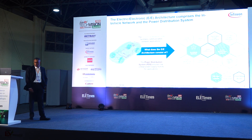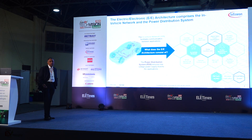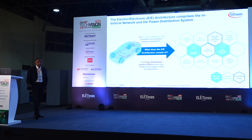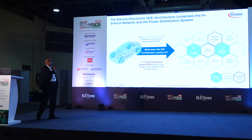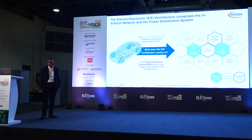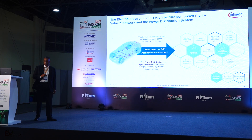If we look at it today, the EE — which is the electric and electronic architecture — is comprised of mainly two, actually three things. The earlier speakers talked about SDV, but if I look mainly from the hardware point of view: in-vehicle network and the power distribution system. The in-vehicle network basically supports and facilitates communication between the various applications, and the PDS powers up all the different systems in your vehicle. These two things are very important for designing and developing your e-architecture in all vehicles.